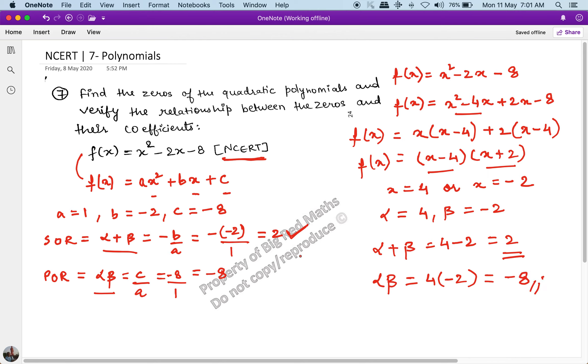This is -8, and this product of roots is also -8. So we have found the zeros and we have validated that the zeros and the coefficients have the right relations. This is the solution to the question.